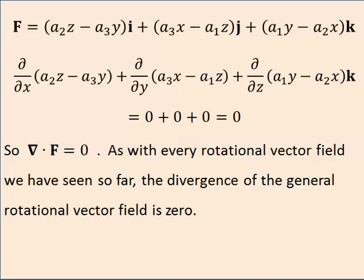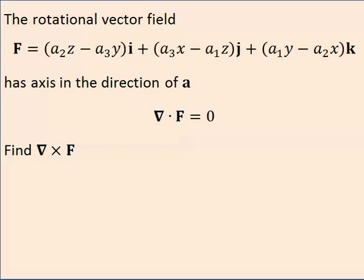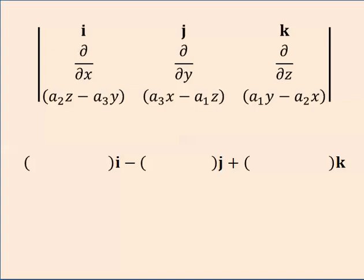What about the cross product? To find the cross product, or the curl, I need to set up this determinant. Notice, I just want to remind you, the j component has a negative in front of it. You always have a negative in front of your j component with a cross product.